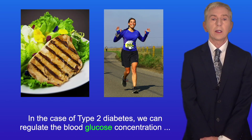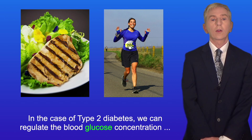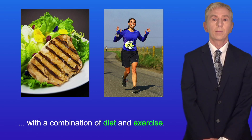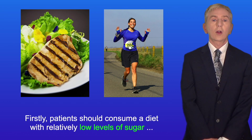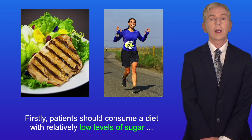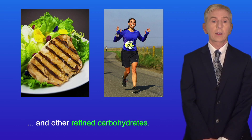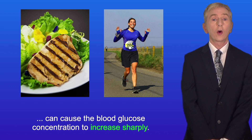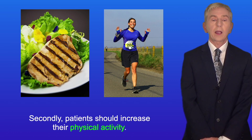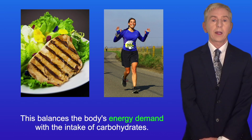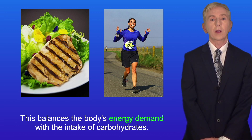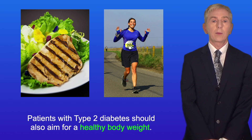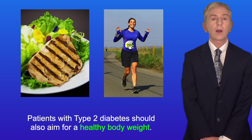In the case of type 2 diabetes, we can regulate blood glucose concentration with a combination of diet and exercise. Patients should consume a diet with relatively low levels of sugar and other refined carbohydrates, because refined carbohydrates can cause blood glucose concentration to increase sharply. Patients should also increase their physical activity, which balances the body's energy demand with the intake of carbohydrates, and should aim for a healthy body weight.